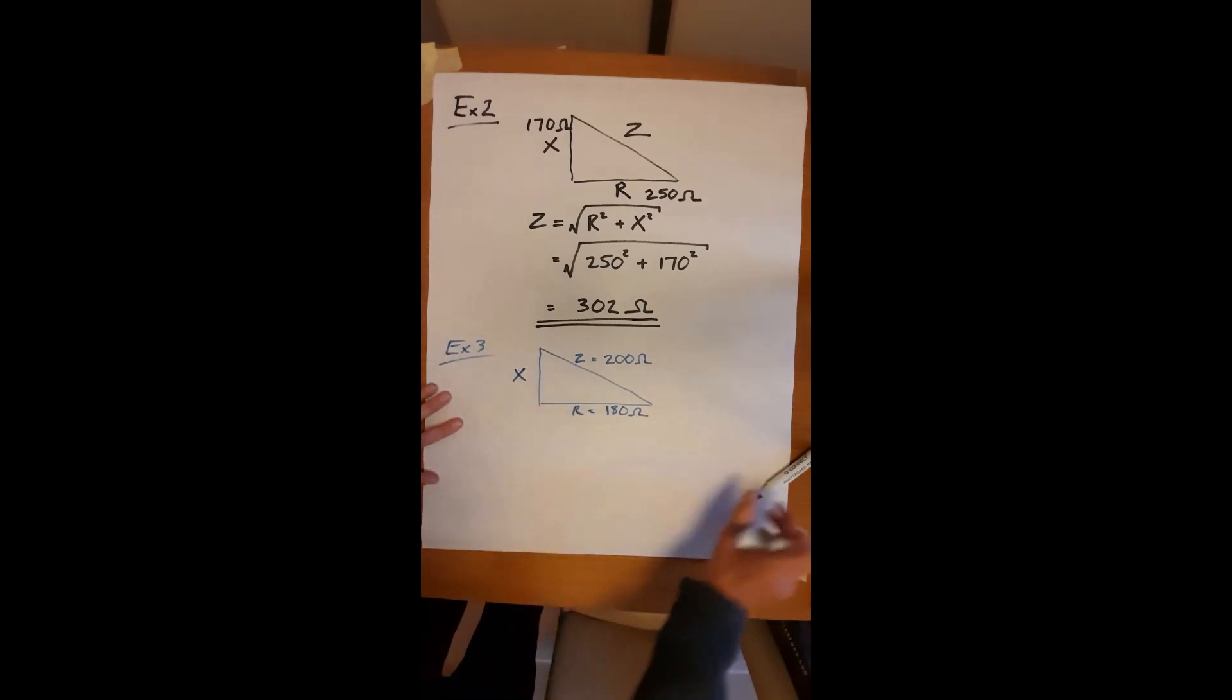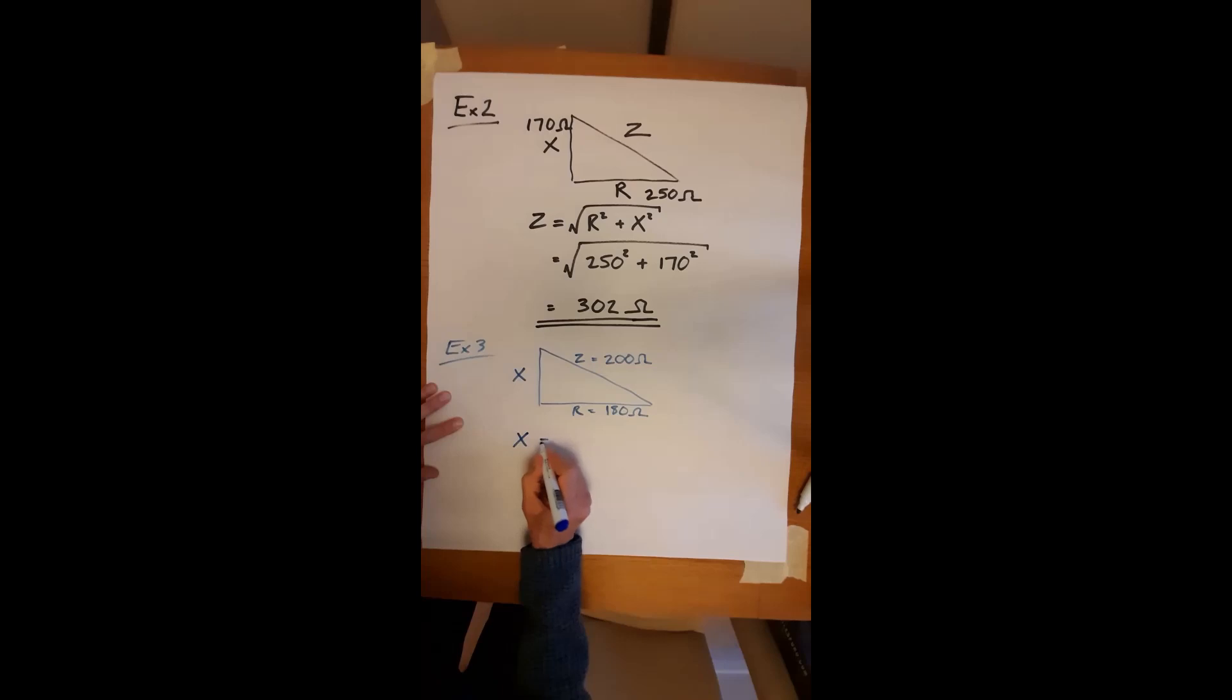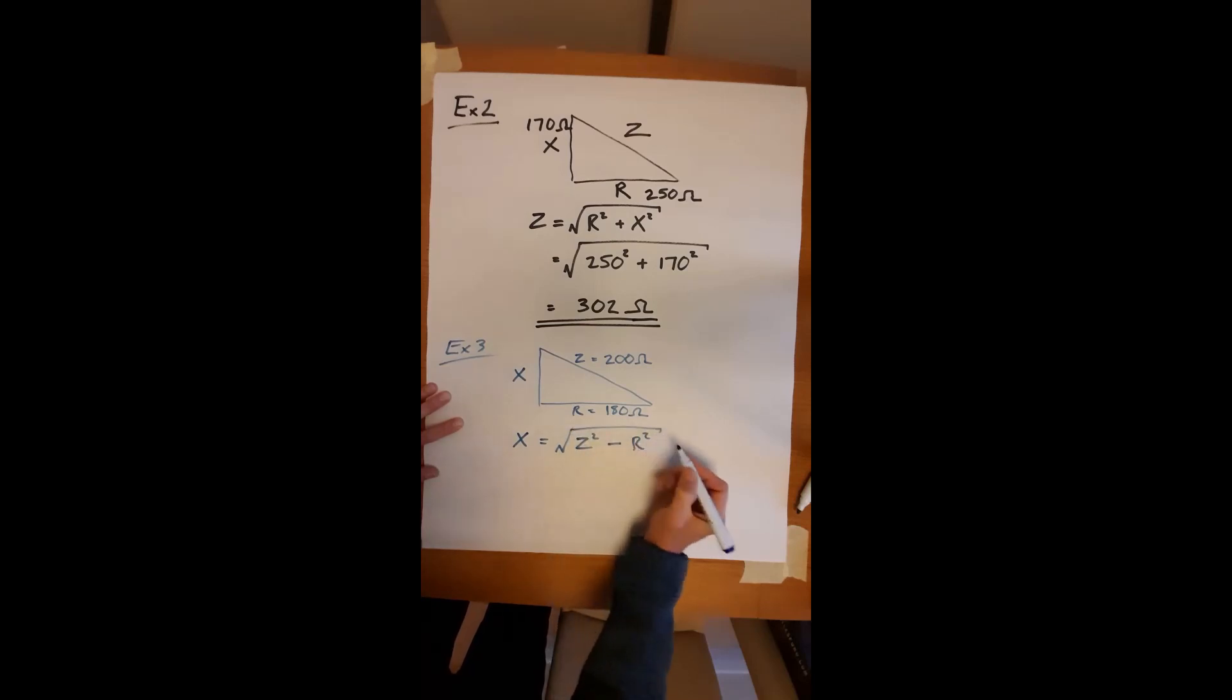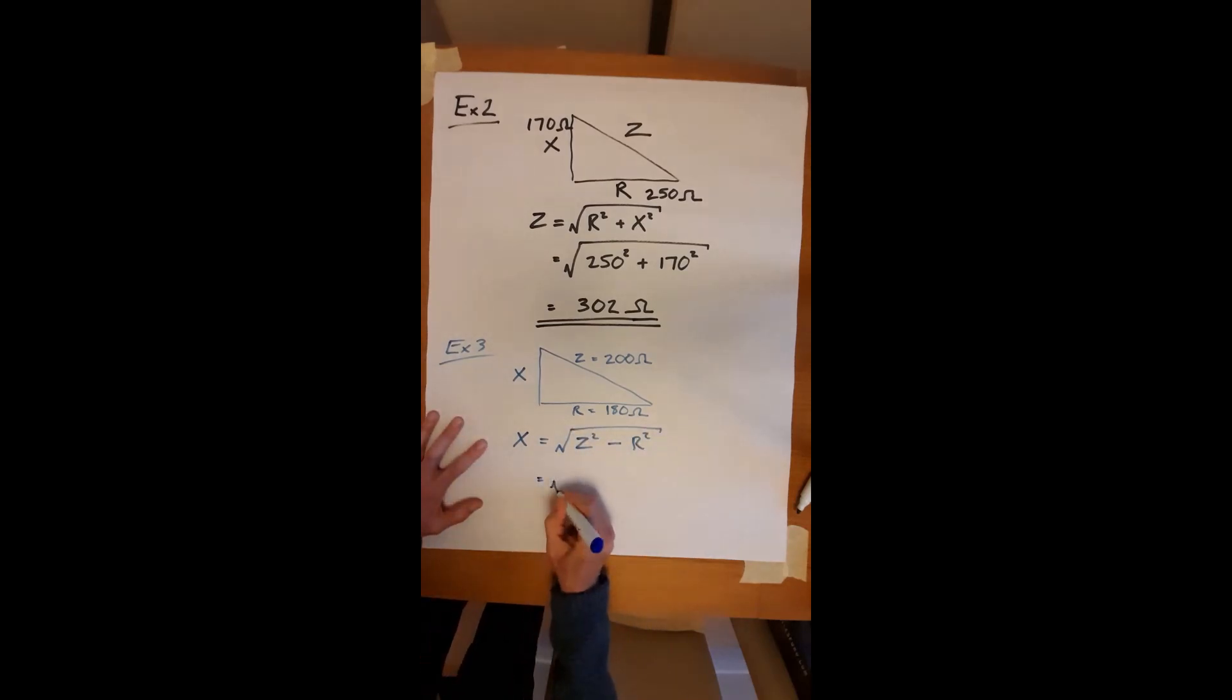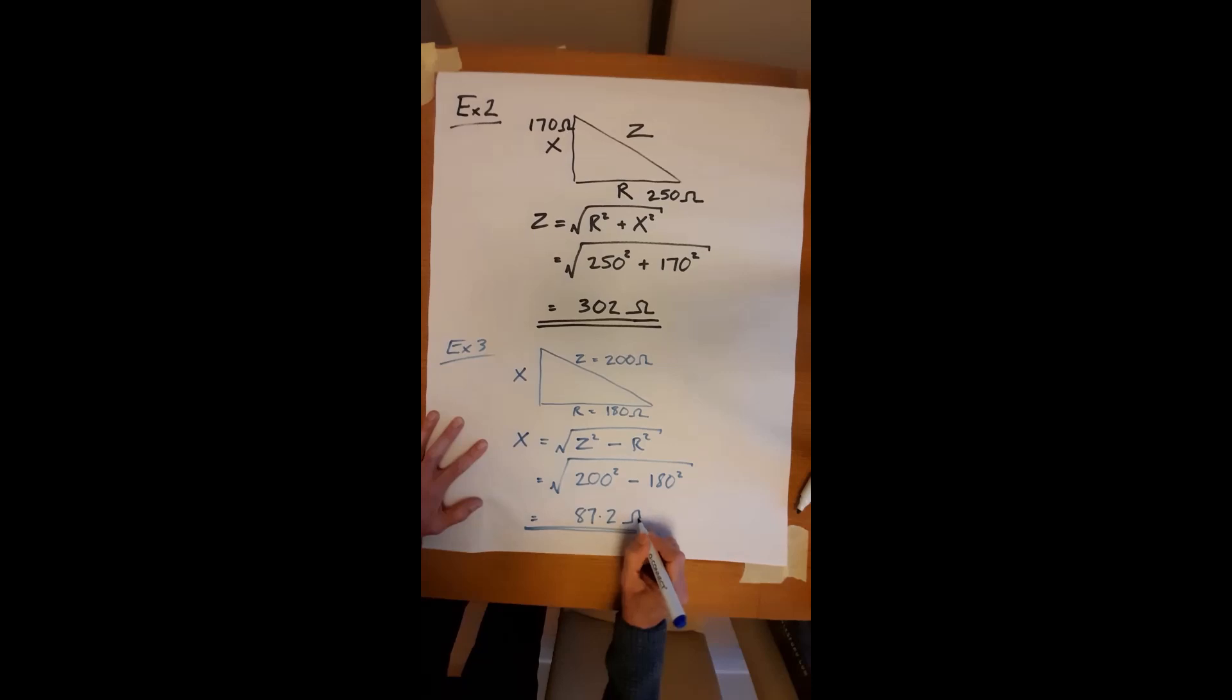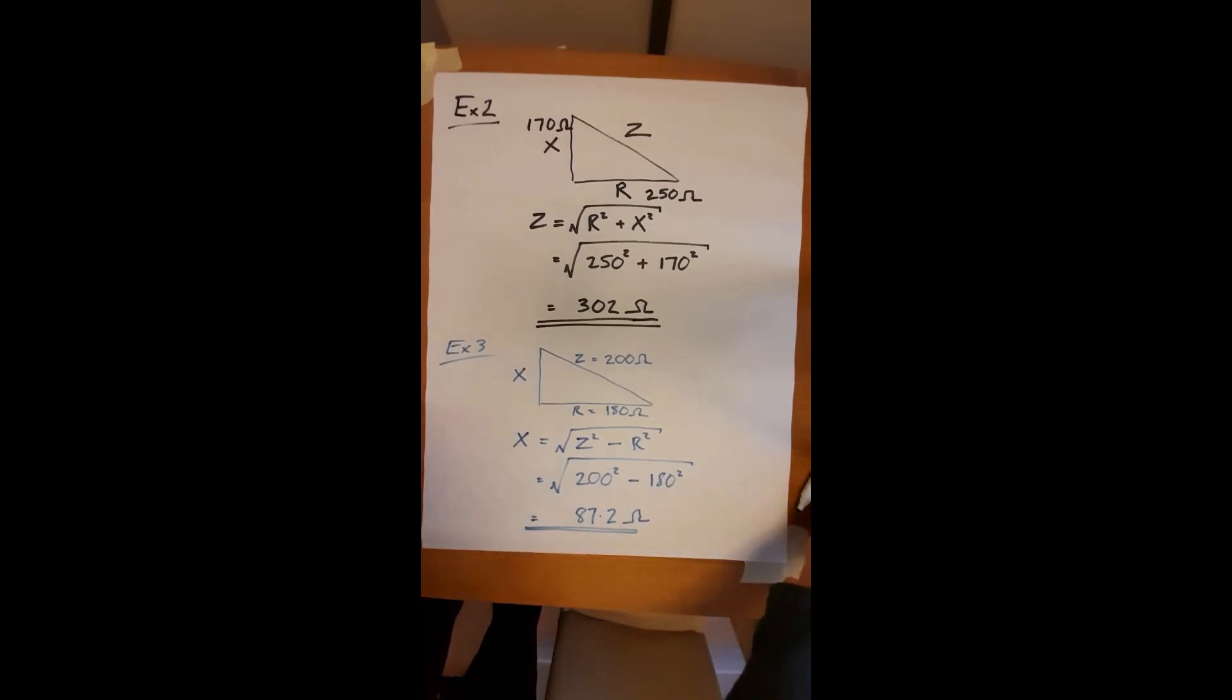So the formula just changes very slightly. X is what we want to find, and it's the square root of the longest one, Z squared, minus the smaller one, R squared. Put the numbers in. The square root of 200 squared minus 180 squared. And hopefully you'll come out with something around about 87, and that's in ohms.